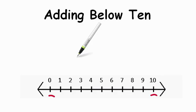A good way for you to add up to the number 10 is to count on. What that means is to start with one number that you're given and count on to the other number.